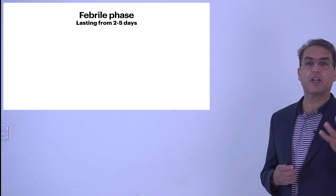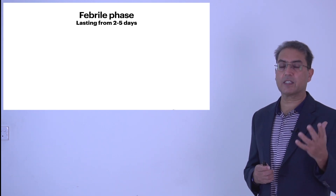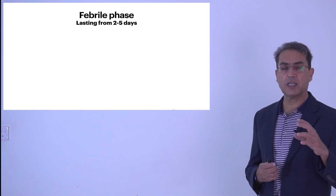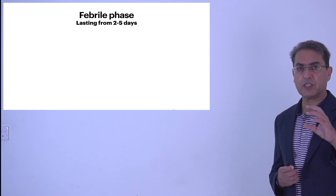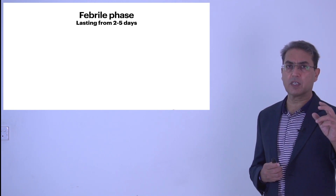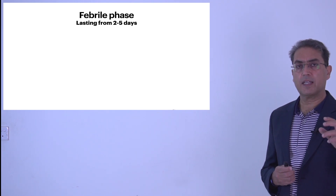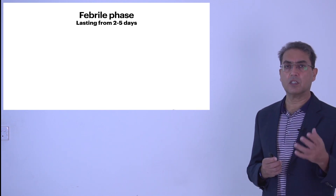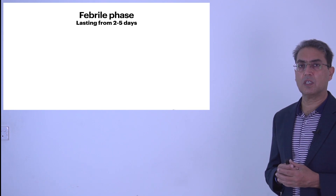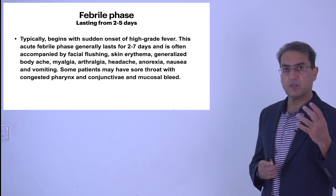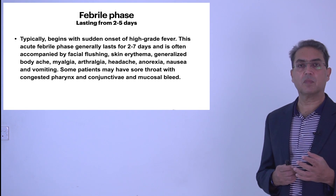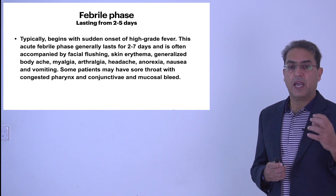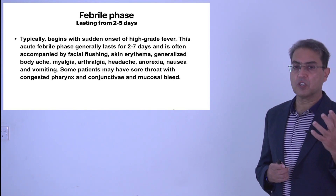The febrile phase usually lasts from two to five days, but it can extend to more than five days — some patients may have fever up to eight to ten days. Generally it is between two to five days that the patient has a febrile illness, then a critical phase if the disease does not resolve, and then the convalescent phase. In about eight to ten days the disease is gone.